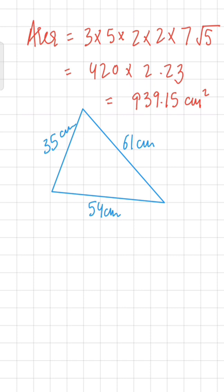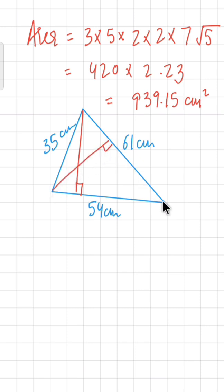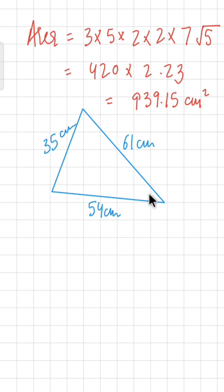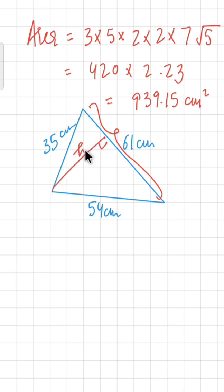Now we need to find the smallest altitude. An altitude is a perpendicular drawn from the opposite vertex to a side (the base). There are three altitudes in a triangle. The shortest altitude always falls on the longest side, which here is 61 centimeters. So we need to find that altitude, which we'll call h.